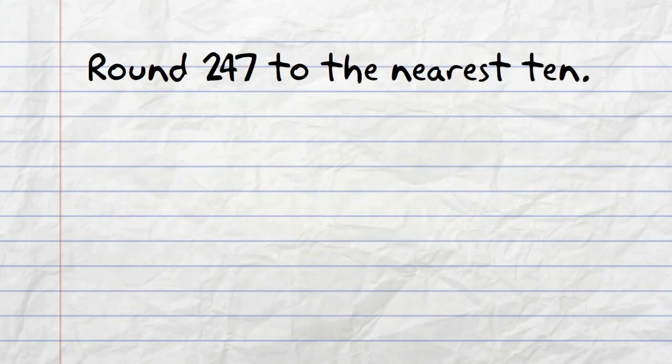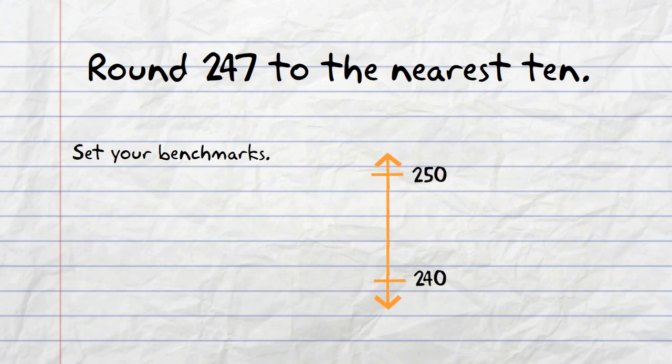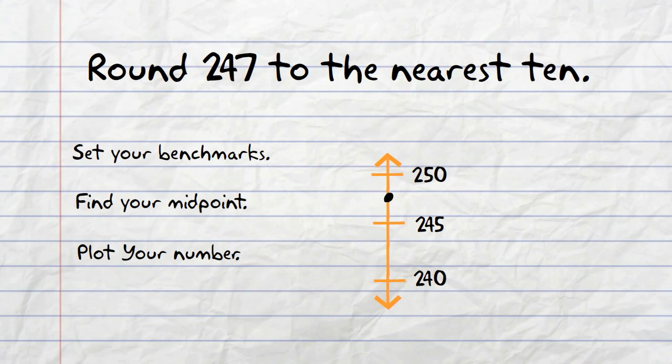Round 247 to the nearest 10. 247 falls between 240 and 250. The midpoint between those two numbers is 245. Next, we would plot 247 on the number line, and we can see that it is closer to 250.